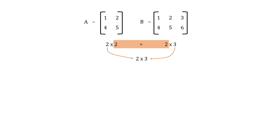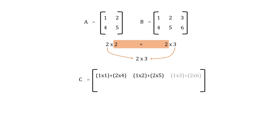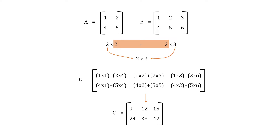The calculation works like this: C's first element is 1 multiplied by 1, plus 2 multiplied by 4. For the second column, 1 times 2 plus 2 times 5 gives the second element. The same process continues for all remaining elements, giving us the final 2x3 matrix C.